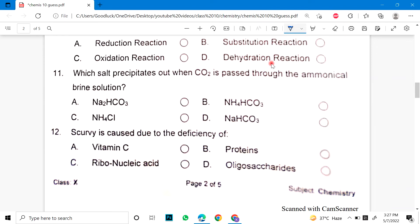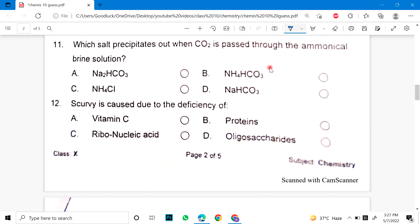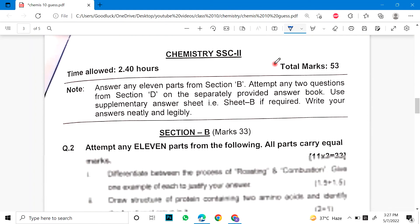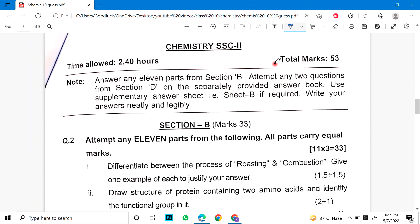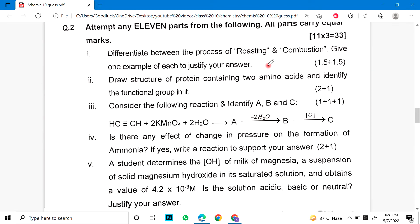Number 11. Which salt precipitates out when CO2 is passed through ammoniacal brine solution? 12 is caused due to deficiency of vitamin C, proteins, ribonucleic acid and oligosaccharide. Short questions. After that, Section B is 33 marks. 11 attempts you have to do, 3 marks each.